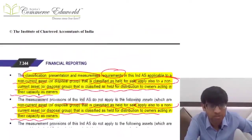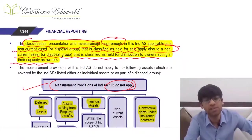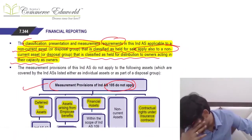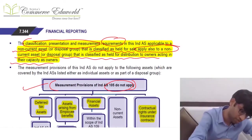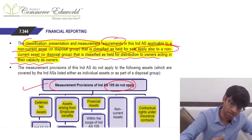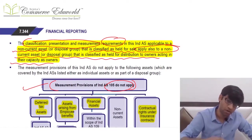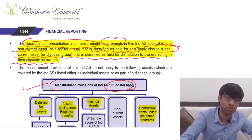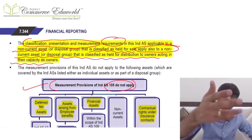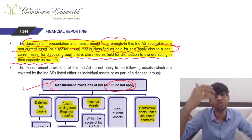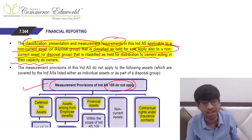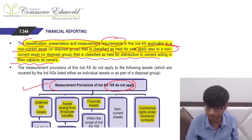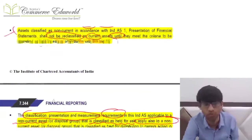In the scope, it is stated that when a non-current asset or disposal group is held for sale, it is covered under this standard. Similarly, if a non-current asset or disposal group is held for distribution to owners in their capacity as owners, that is also covered here and treated in the same manner as held for sale.